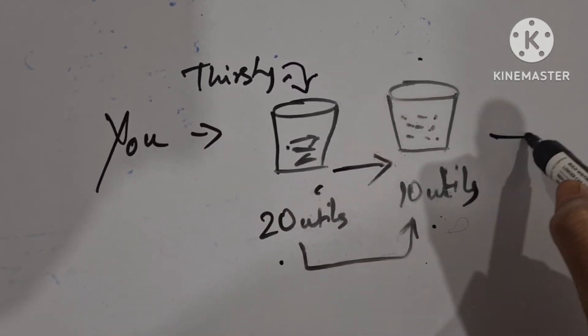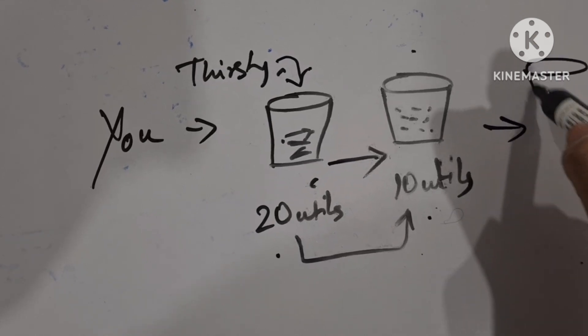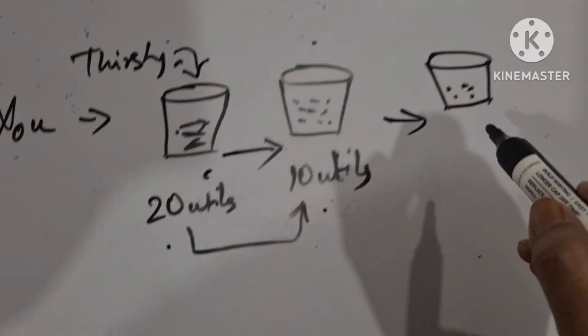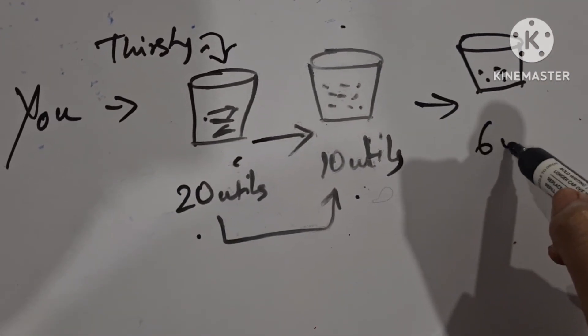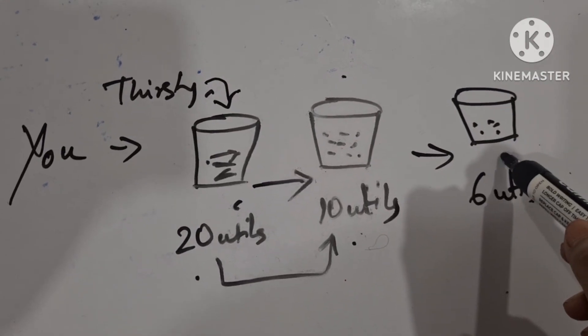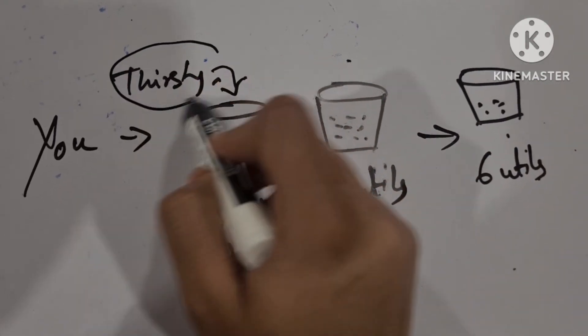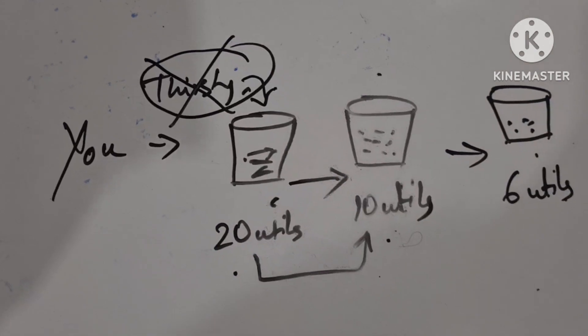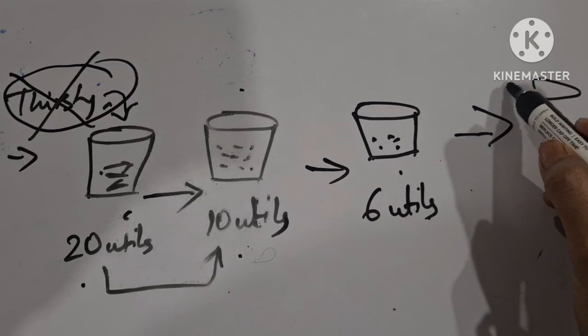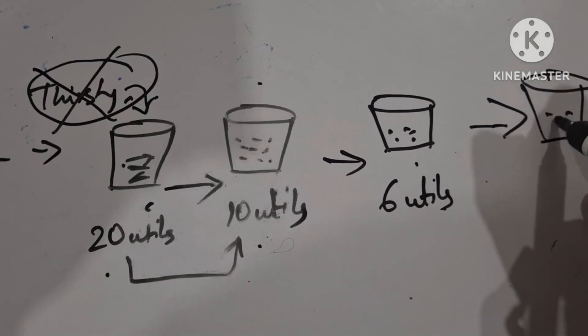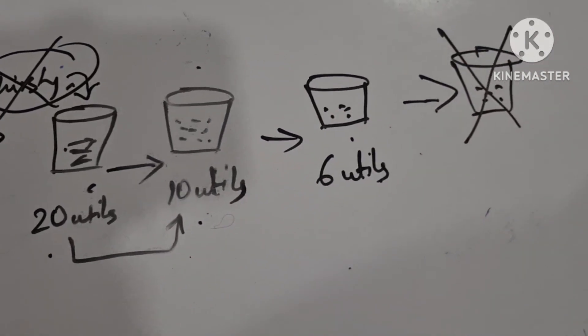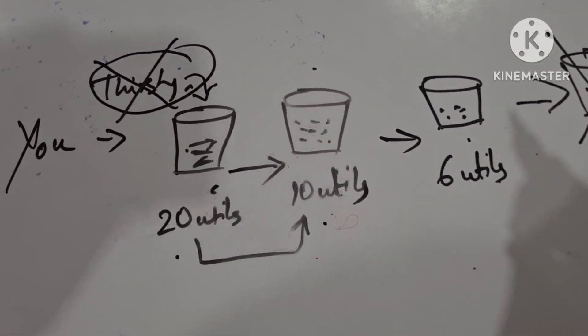So, when you take the third glass of water, the utility falls again. It suppose goes to 6 utils. Now, when you drank the third glass of water, then your thirst is completely off. Now you are not thirsty. Now, will you drink the fourth glass of water? Do you drink this fourth glass of water? No. If you take it then what will happen? Excess of water.